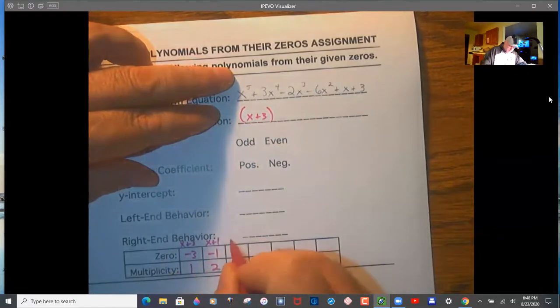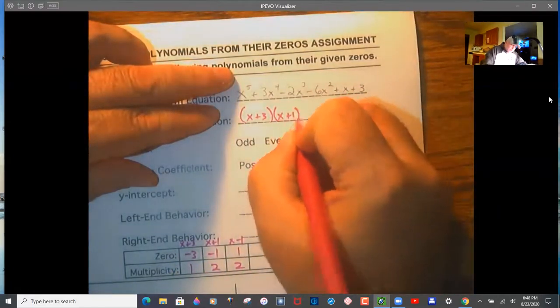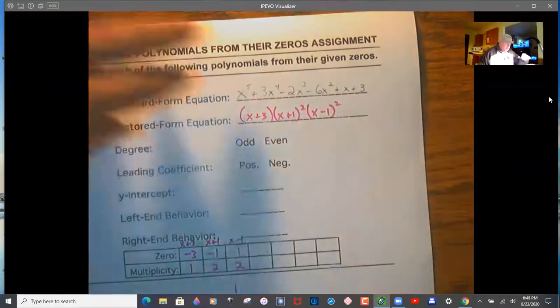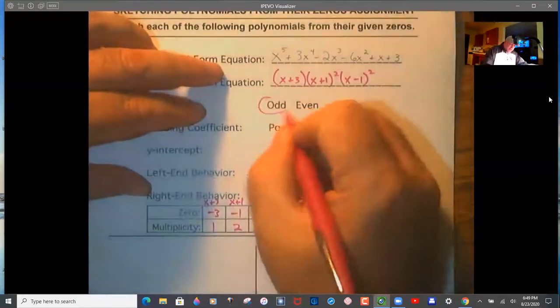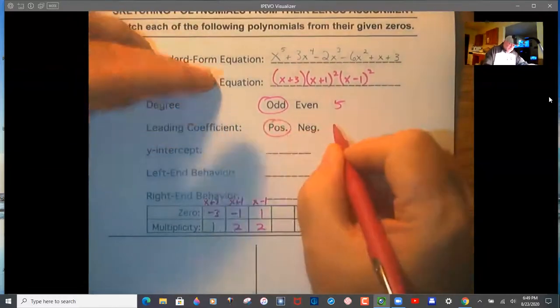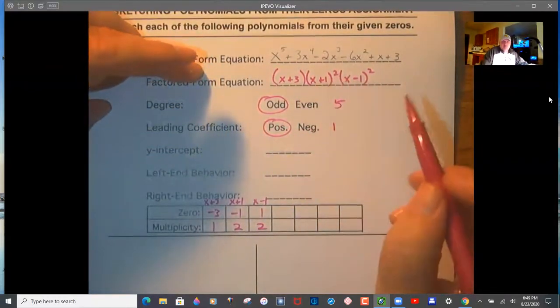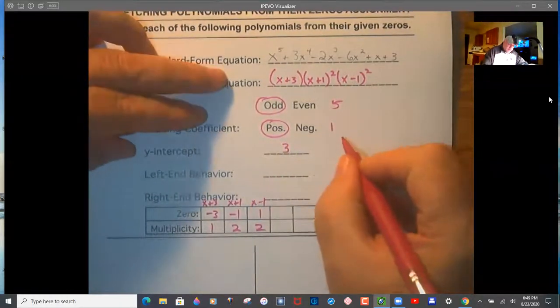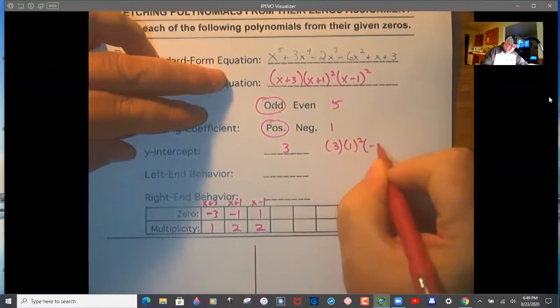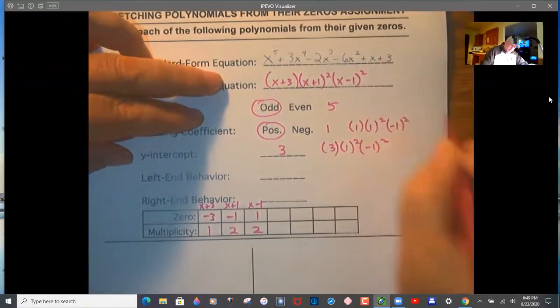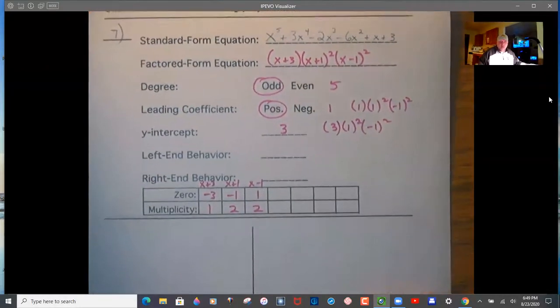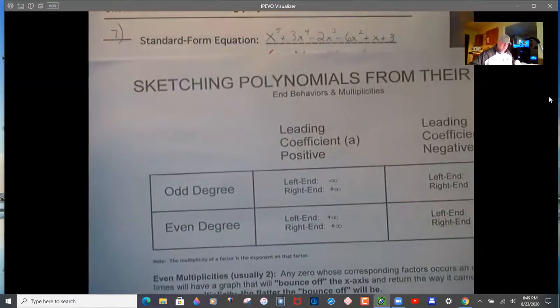The zero finder gave you their multiplicities, you saw them appear twice. That's huge. You could also look at the graph and it would tell you. At -3, it's 1. Then you see them bounce back twice in that same direction. That's the giveaway. This is (x+1), power is 2. (x-1), power is 2. That will tell you how to write the factored form equation. Odd degree 5, positive leading coefficient 1, so 1 times 1² times 1². Y-intercept is 3. That's 3 times 1² times -1². Left-end behavior, you look up on that sheet of notes, odd positive.